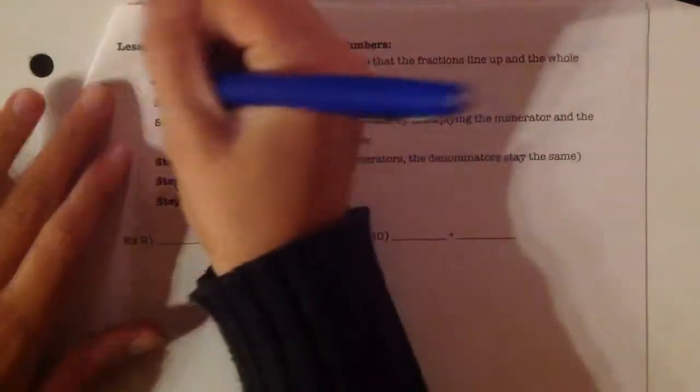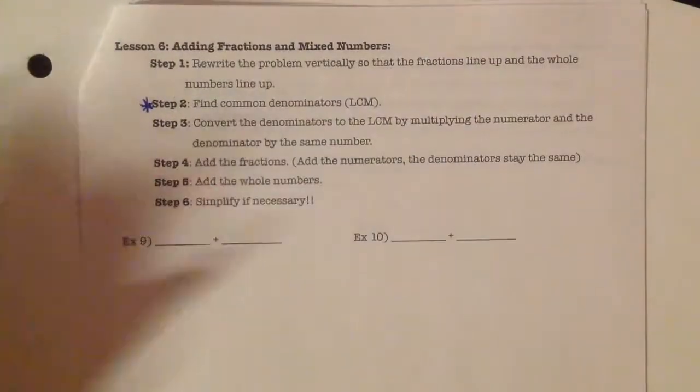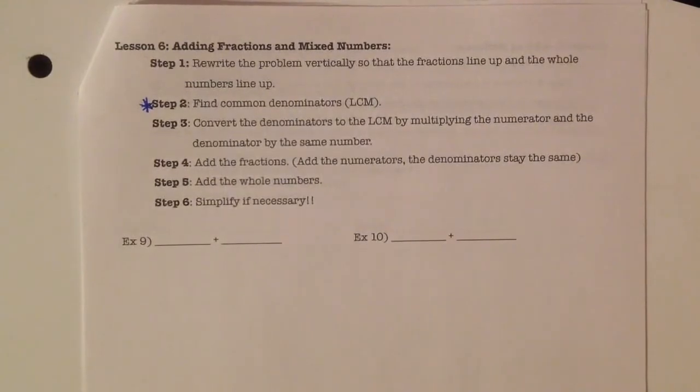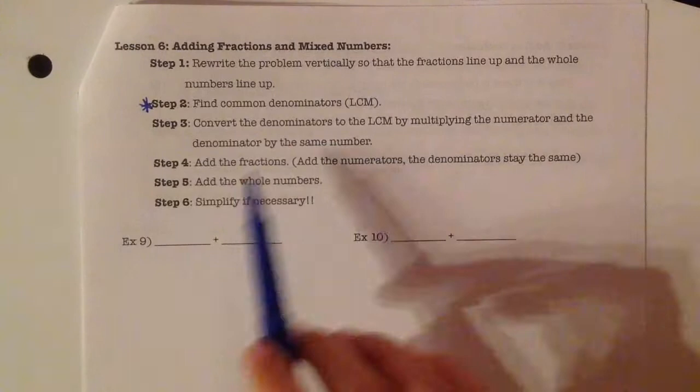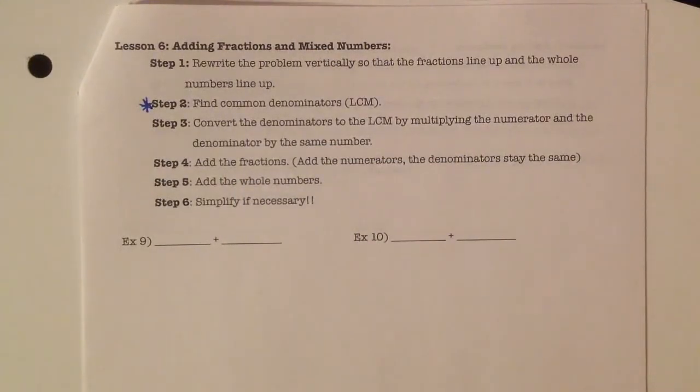The important part with adding and subtracting is that we have to find common denominators, or that least common multiple. Once we find those, we're going to convert our denominators by multiplying the numerator and denominator by the same number. Once we've converted, add the fractions where you're just adding the numerators, not the denominators, add the whole numbers, and then simplify if necessary.